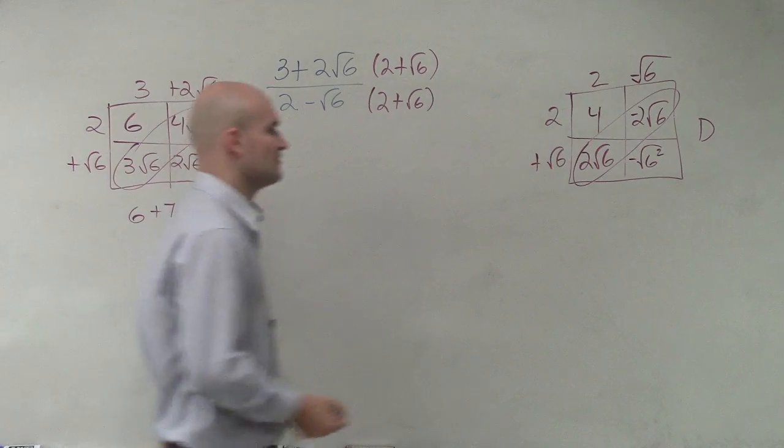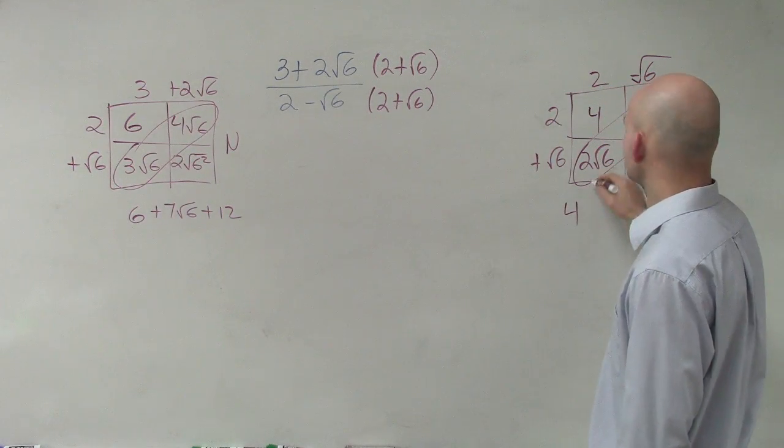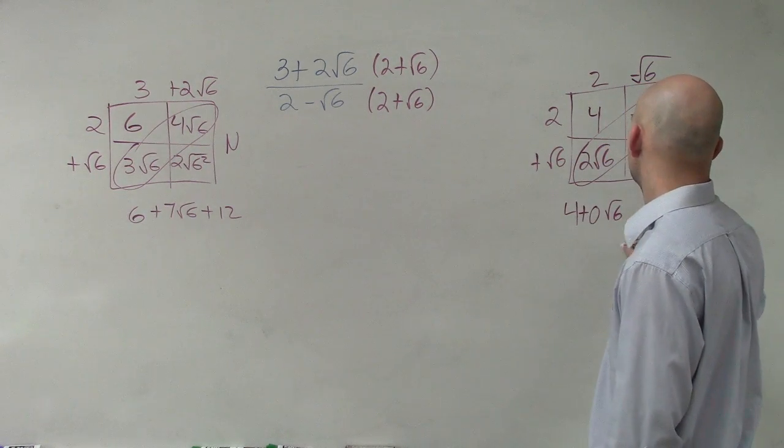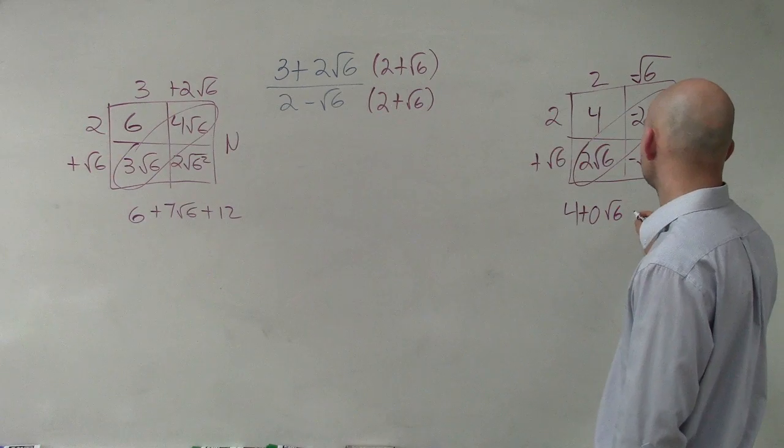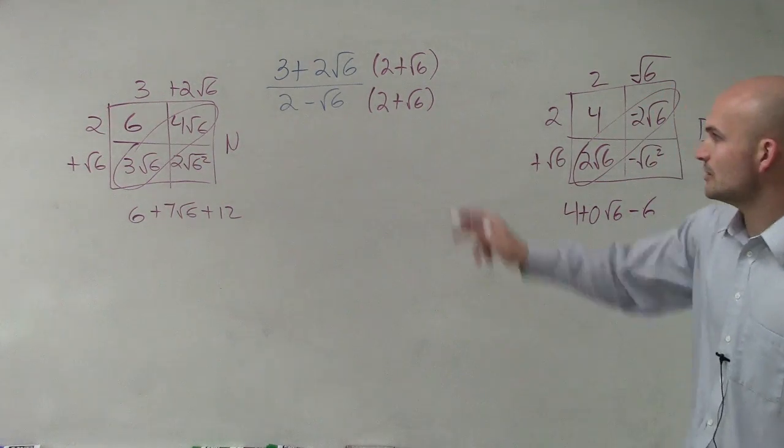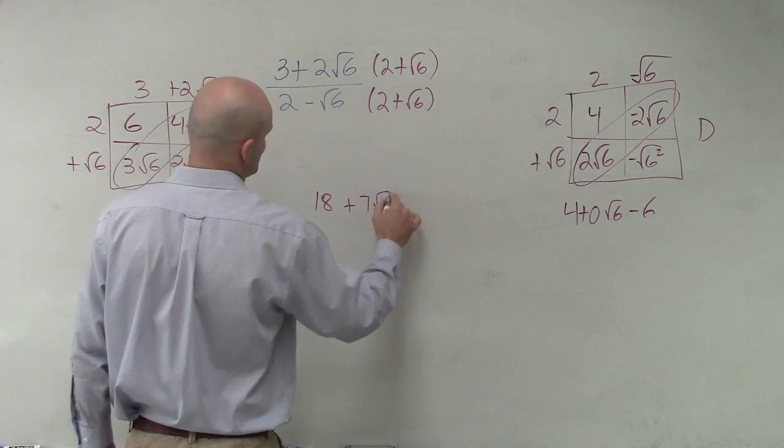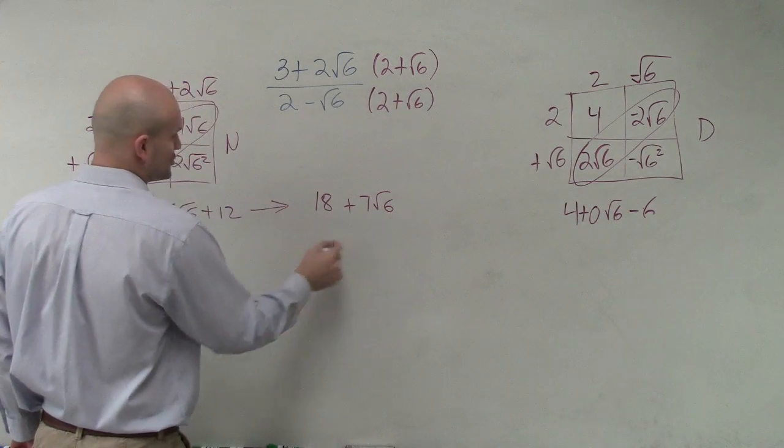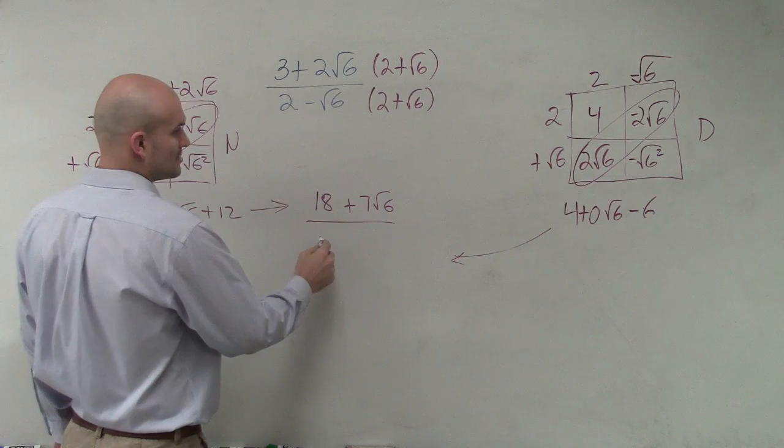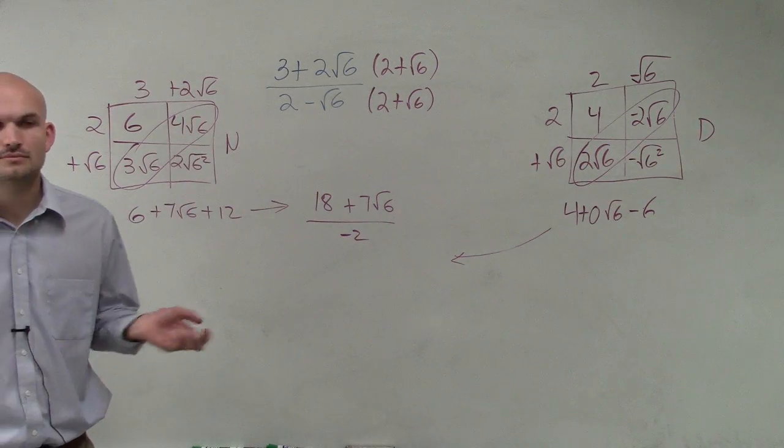And then over here I have 4. This becomes 0 square root of 6, and then negative square root of 6 squared just becomes negative 6. So that's our denominator. Let's simplify: 18 plus 7 square root of 6, which is your numerator, over the denominator, which is negative 2. And that's it.